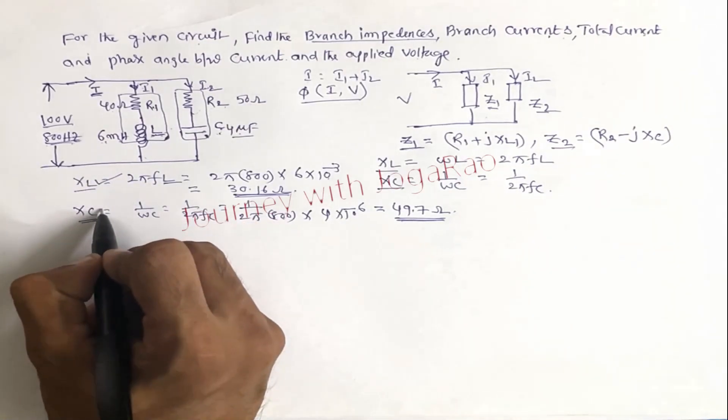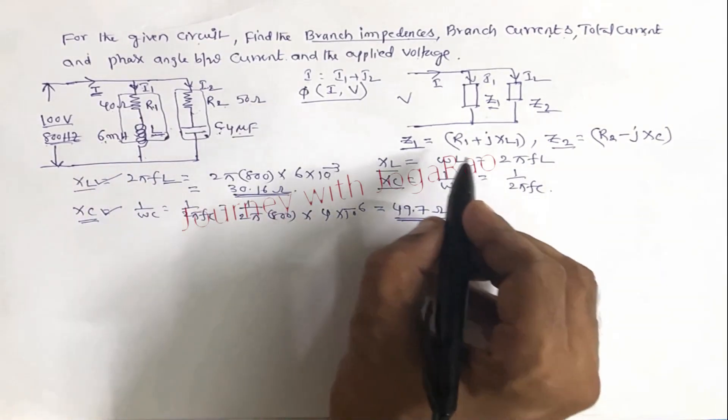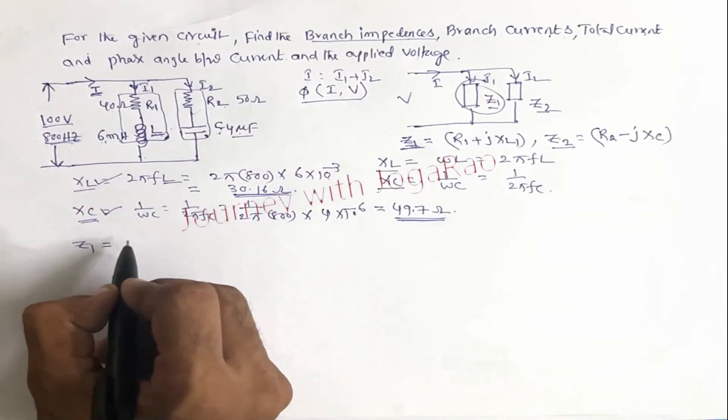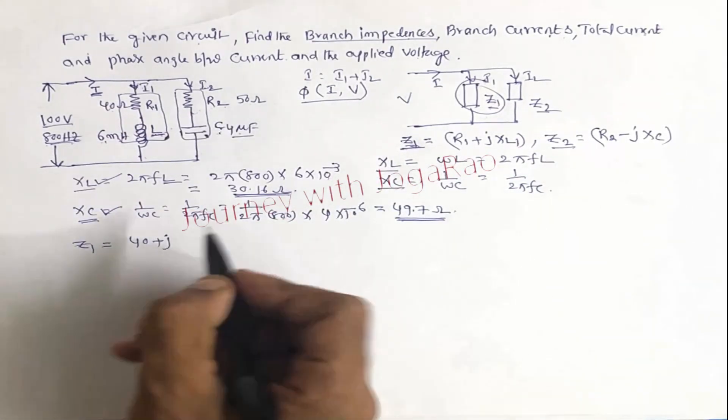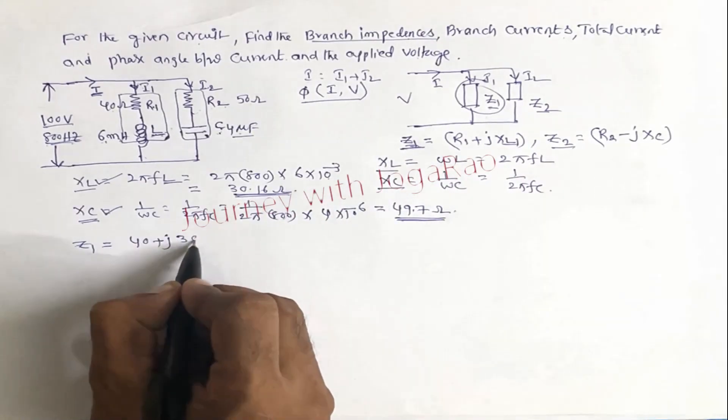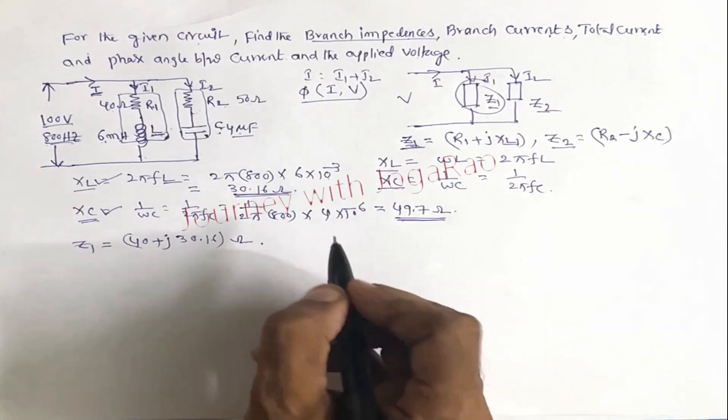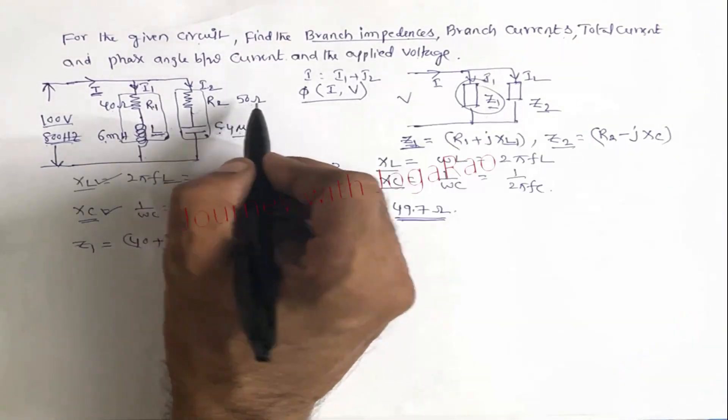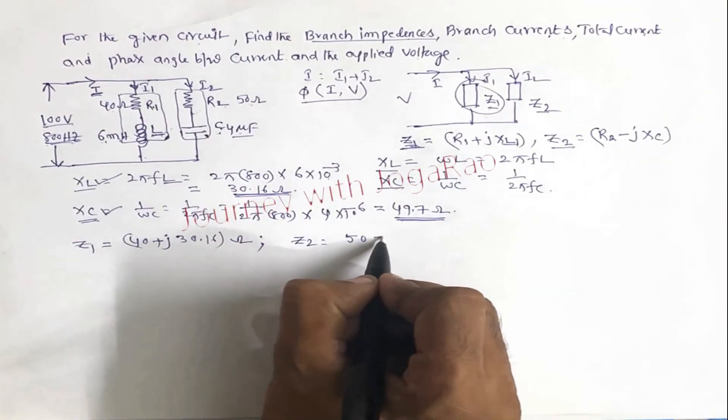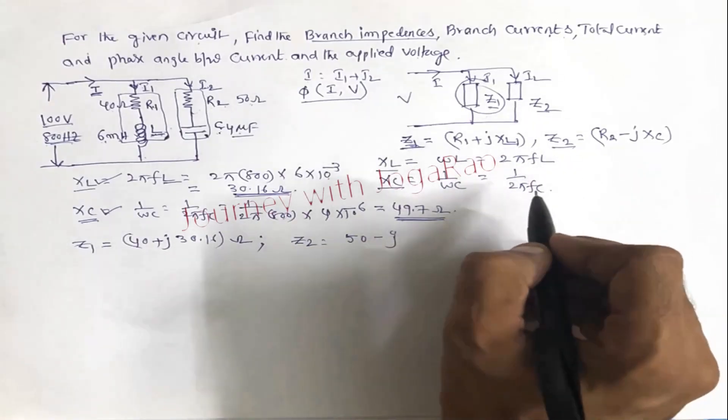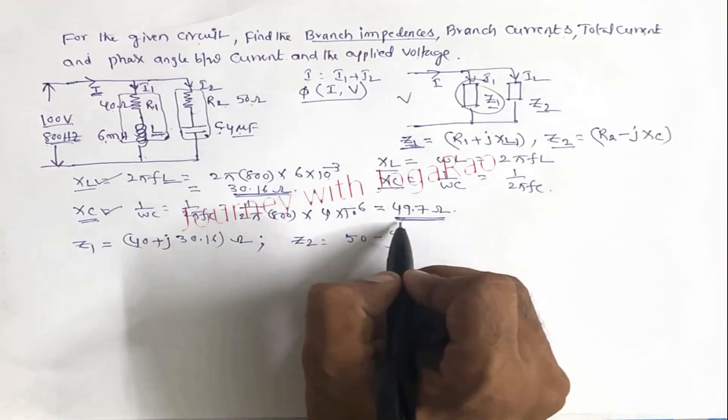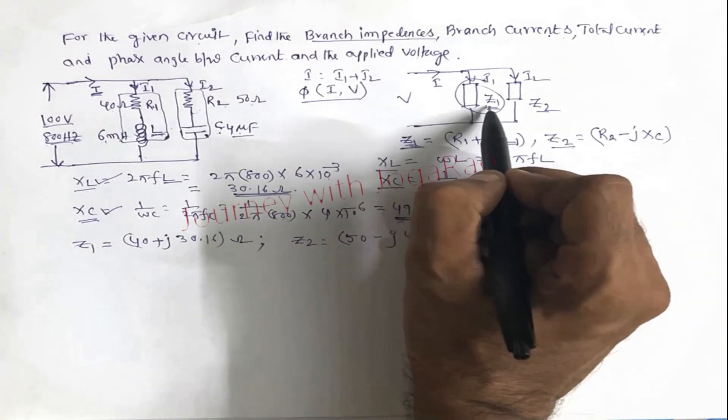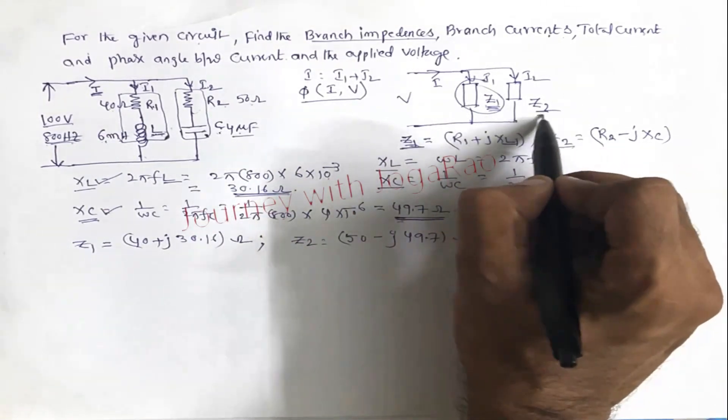Now we can find impedance. This branch impedance z1 is equal 40 plus j xl, 30.16 ohms. And similarly z2 is r2, 50, minus j xc, 49.7 ohms. So here the branch impedance z1 and z2.